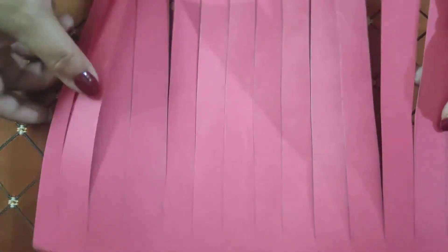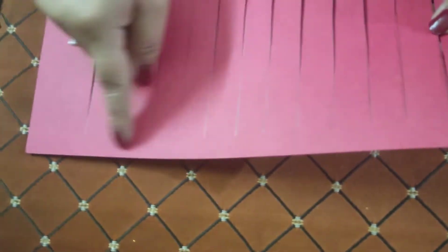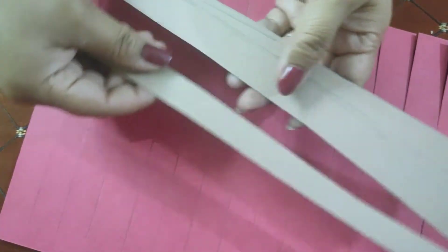On the other sheet, you will have to cut them completely. After cutting, one sheet will look like this, and on the other sheet you will have complete strips of paper like this.